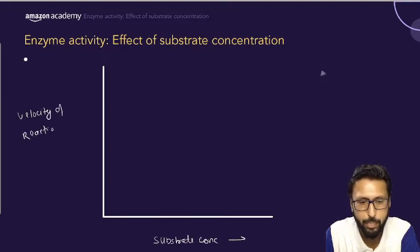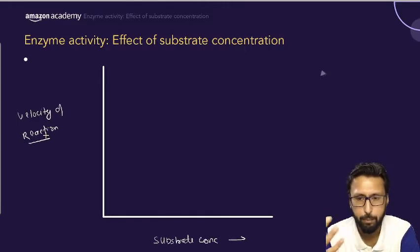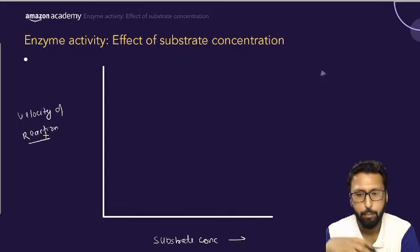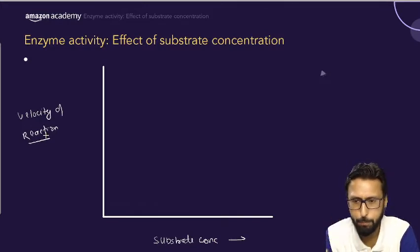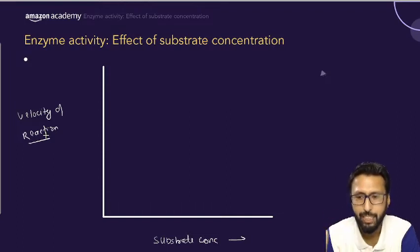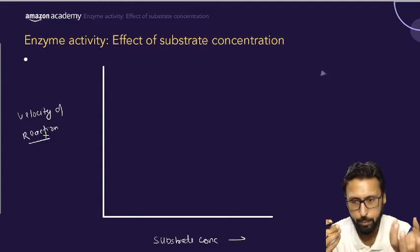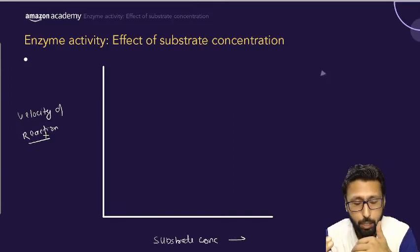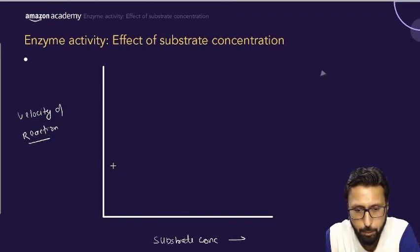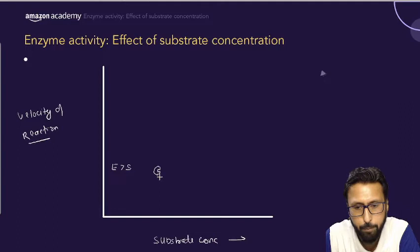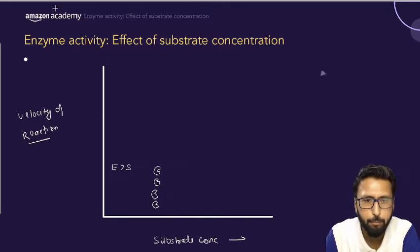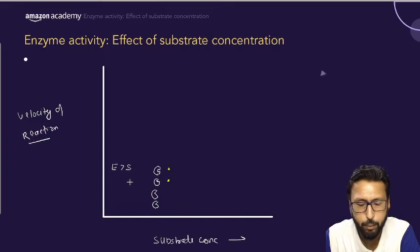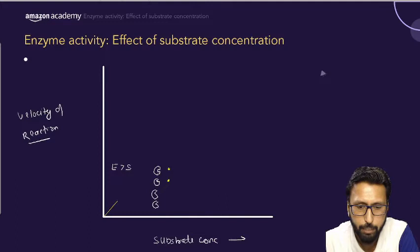For example, when we eat protein, it is digested by pepsin enzyme found in the stomach. Initially, more enzyme is present than substrate — suppose we have four enzymes but only two molecules of substrate. Because of that, initially the rate of reaction is slow. Enzymes are more than the substrate at this stage.